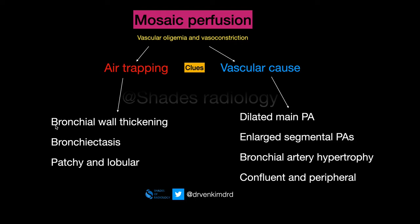If you see bronchial wall thickening, bronchiectasis, and patchy lobular involvement, think of air trapping due to airway disease. If it is due to a vascular cause, look for a dilated main pulmonary artery — the main pulmonary artery diameter will exceed that of the aorta. Also look for enlarged segmental pulmonary arteries and bronchial artery hypertrophy, best seen on contrast. The involvement is usually confluent and peripheral in the lung fields.